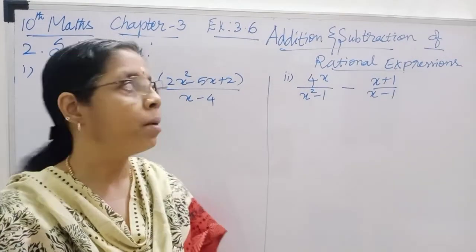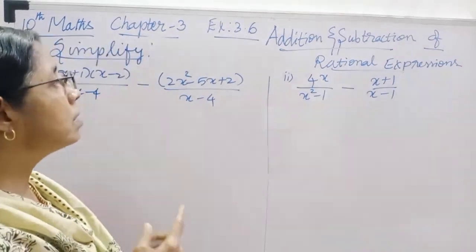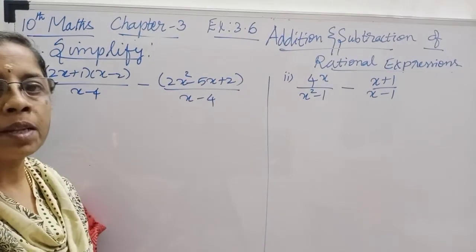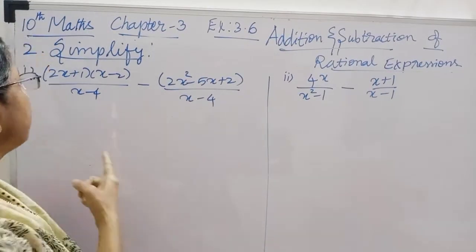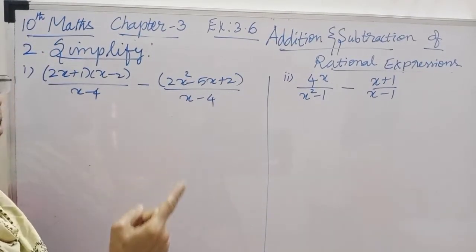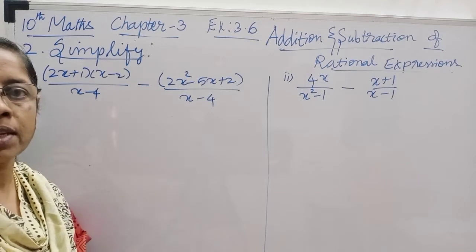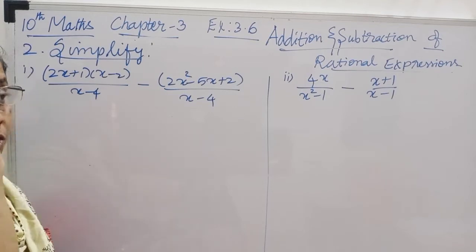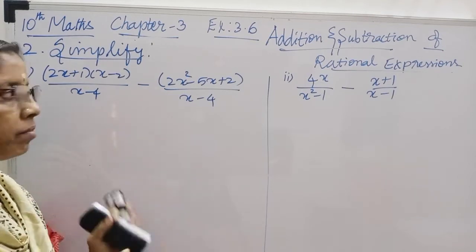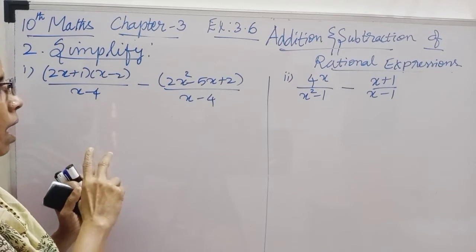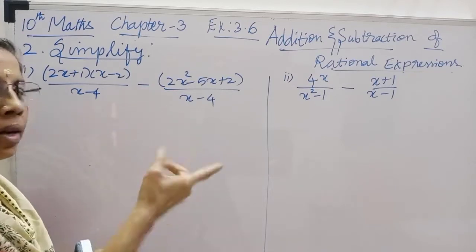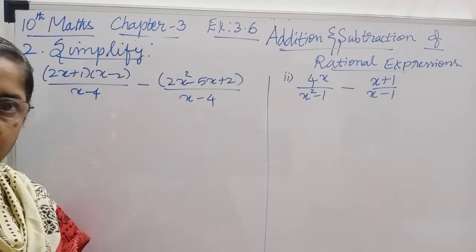Let's look at the first step in exercise 3.6. This is the addition and subtraction of rational expressions with same denominator and different denominators.